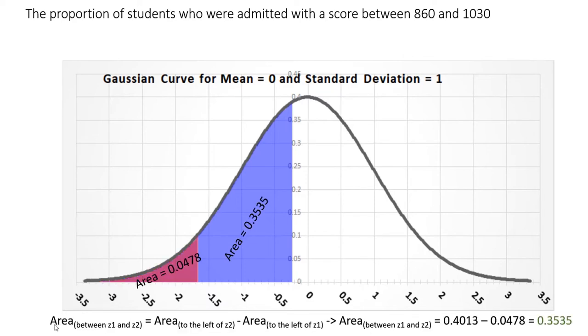Then, the other z-value corresponded to an area of approximately 0.0478 into the tail. If I subtract this area, in other words, the 0.0478 from the entire area to the left of this blue, I would have 0.4013 minus 0.0478, which equals approximately 0.3535.